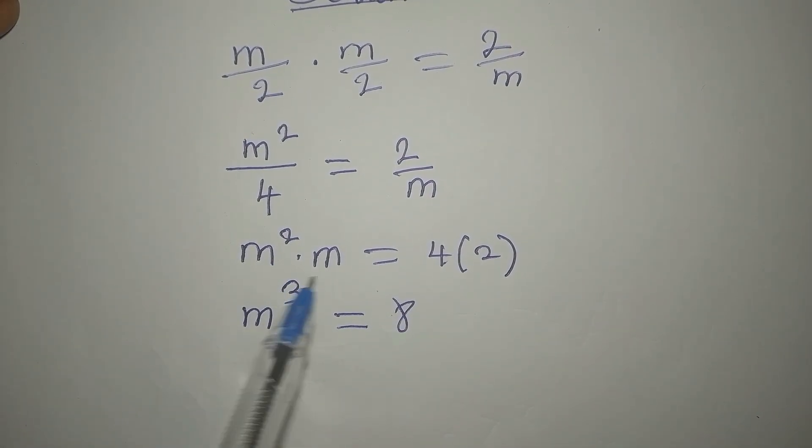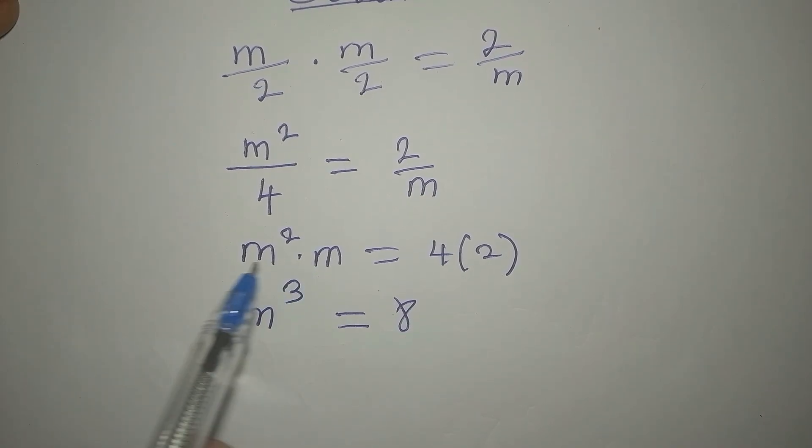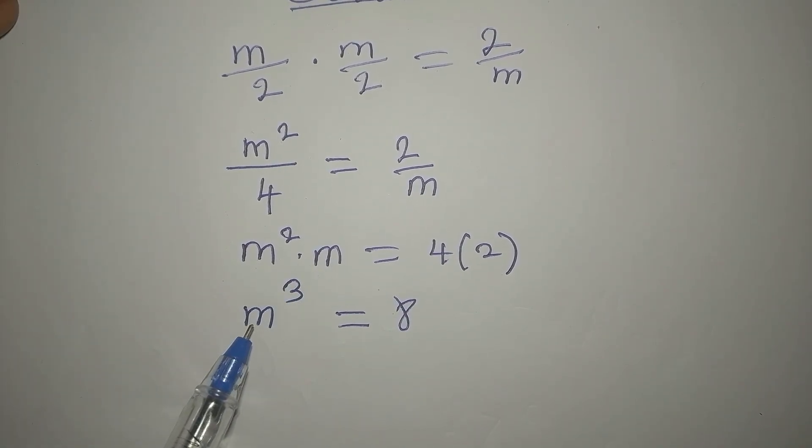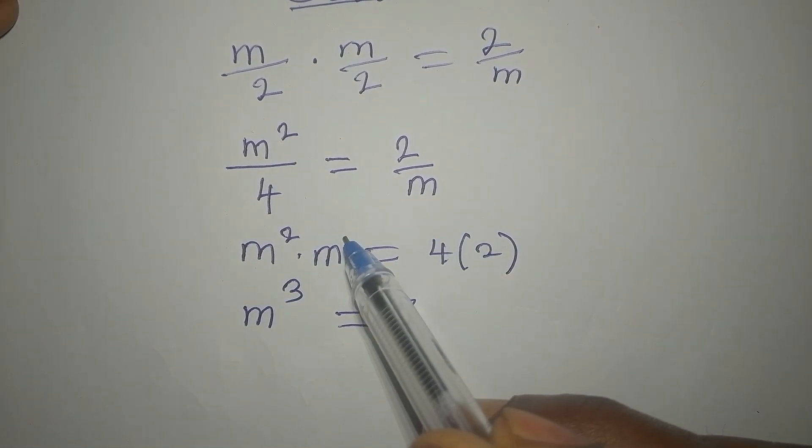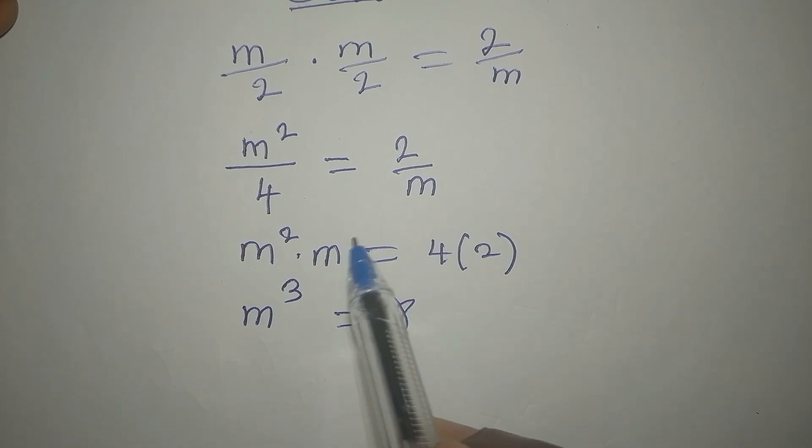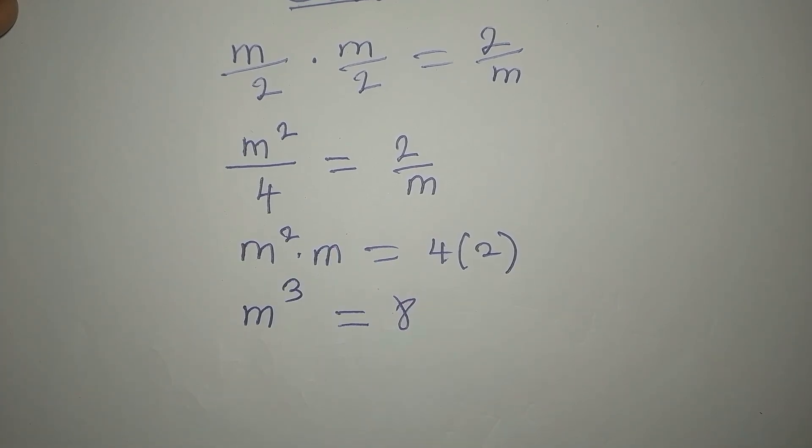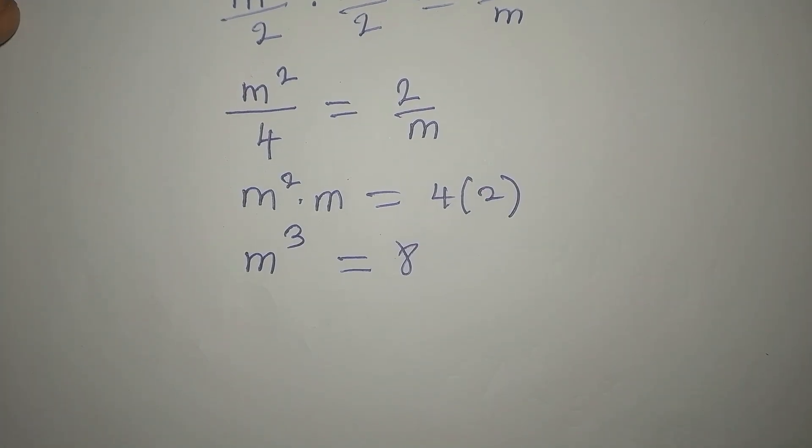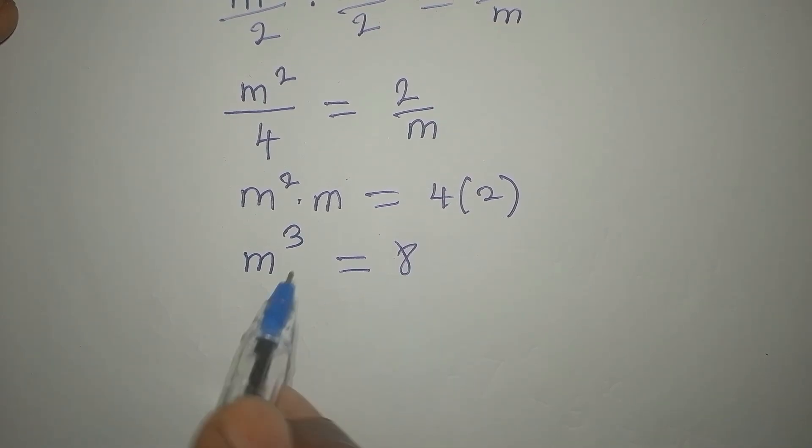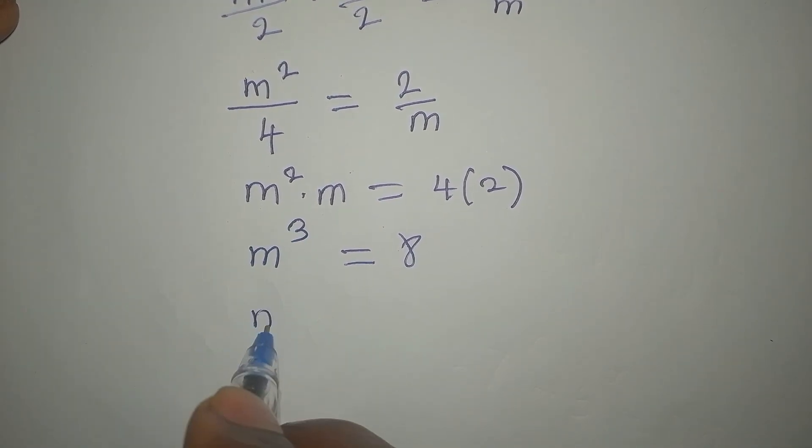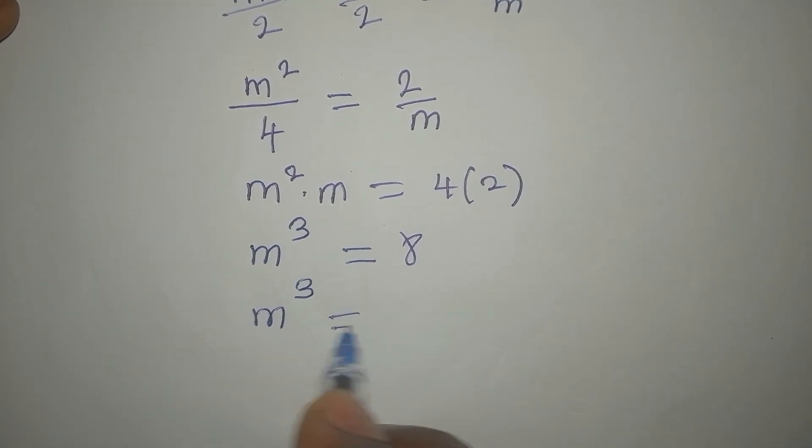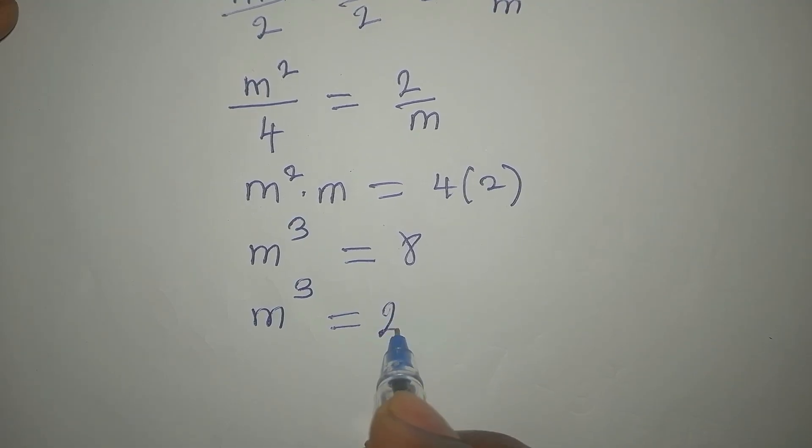Remember, m squared times m, it means that you should pick one of the bases, which is m. Then the power of m here is invisible 1. So 2 plus 1 is 3. But then we can write it in this form. So we have m to the power of 3 equals 8 is 2 to the power of 3.